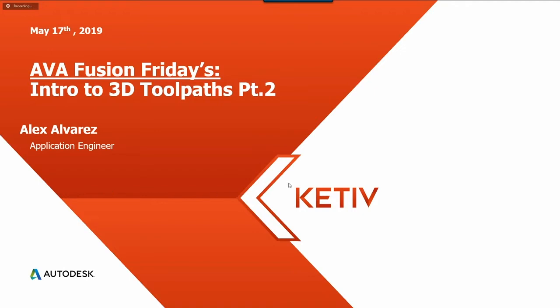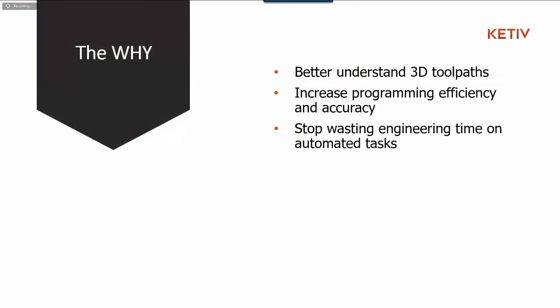Any questions you have, feel free to ask in the Q&A box. I'll do my best to answer either during or at the end of the webinar. So, the why to this webinar: we want to understand 3D toolpaths. 2D toolpaths are pretty straightforward — you select the chain, you select the loop, and the toolpath gets generated. But with 3D toolpaths it's a little different. You really just have to select a tool and hit OK, and the software generates a toolpath based off of the model, because 3D toolpaths are primarily driven off of model geometry or model surfaces.